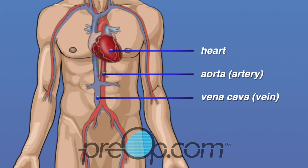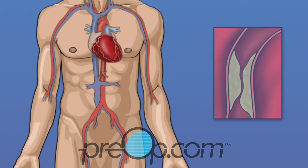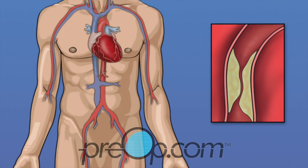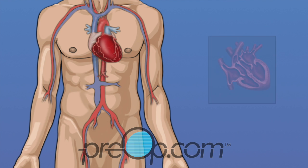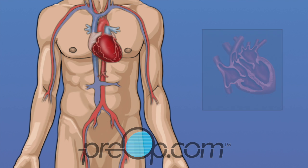It carries oxygen-poor blood back to the heart. During a cardiac cath, your cardiologist will test how well your heart muscle is working. The arteries that carry oxygen to the heart are examined, and blocked arteries can be identified. The inside of the heart, the walls, and important flaps called valves are checked for problems.